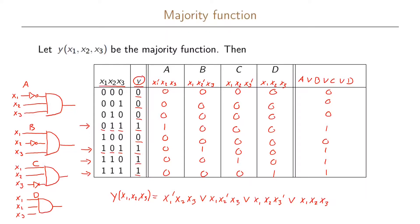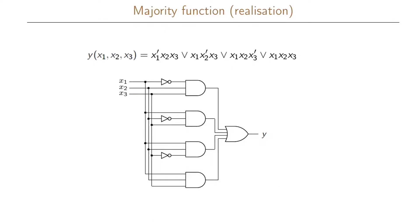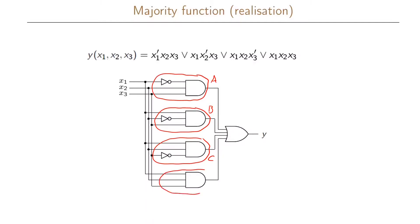This expression is our sum-of-products realization of the majority function, and we can now realize the full function using a circuit. Part A feeds into the OR gate, followed by part B, part C, and part D — all combined using a single OR gate. However, it is worth noting that this is not the best or minimal way to realize this function; it would be possible to realize it with fewer expressions and fewer gates.